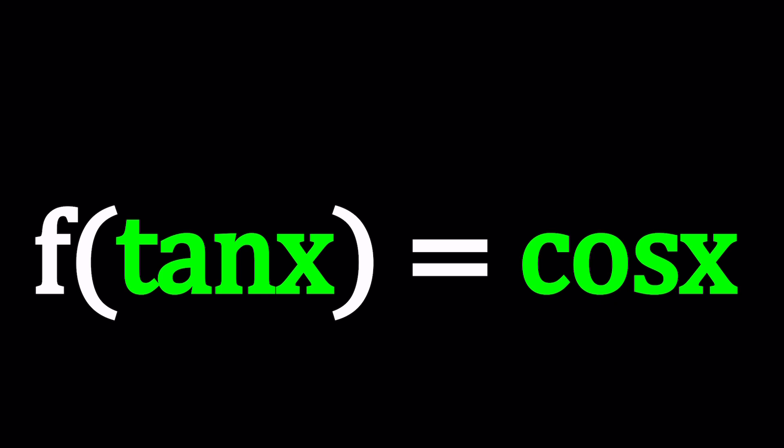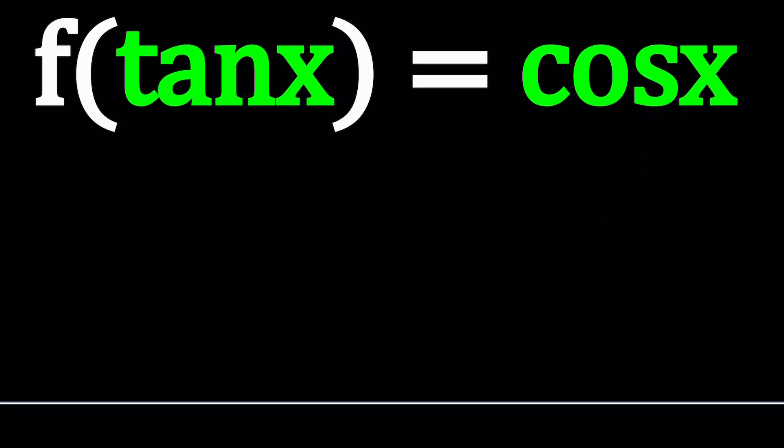Now how do you turn something into something else? That's what functions do. Functions are basically like machines. You have an input, in this case our input is tangent x, something happens inside, who knows what, and then the output becomes cosine of x.